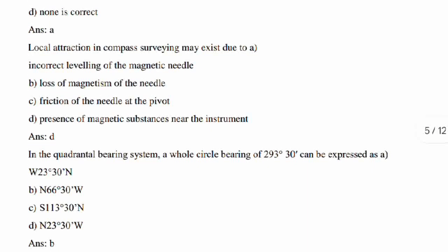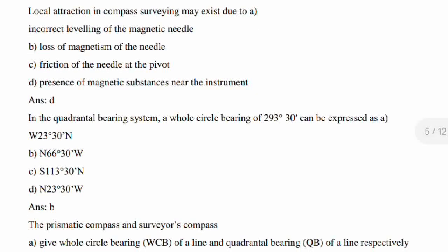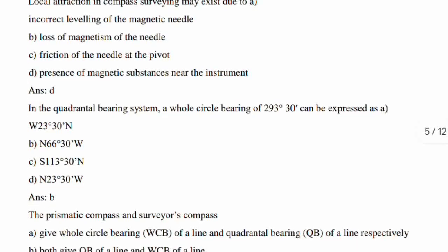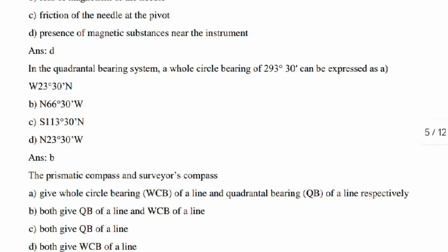Local attraction in compass surveying may exist due to what? Local attraction in compass surveying may exist due to presence of magnetic substances near the instrument.